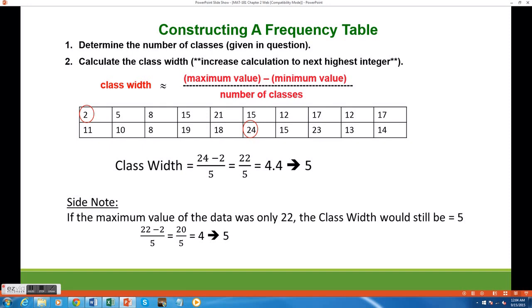Calculating the class width is a two-step process. We first want to use the formula given here in red, and then we will take the result of that calculation and increase the result to the next highest integer. The formula requires us to know the largest data value and the smallest data value, which are 24 and 2 respectively.